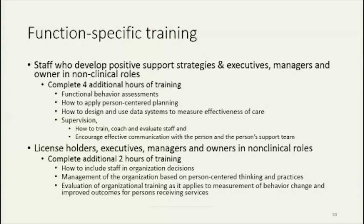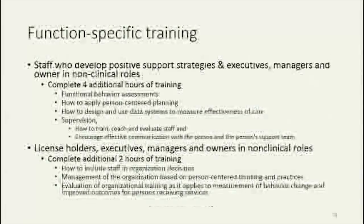The next category of function-specific training is specific to license holders, executives, managers, and owners in non-clinical roles — notably, staff who develop positive support strategies is left off of this section. For this category, people need to complete an additional two hours of training around how to include staff in organizational decisions, management of the organization based on person-centered thinking and practices, and evaluation of organizational training as it applies to measurement of behavior change and improved outcomes for persons receiving services. So while it's possible your executives, managers, and owners would only need to take the four and two hours listed in function-specific training, it is possible that they might need to take the core training as well if those job responsibilities are assigned to them.